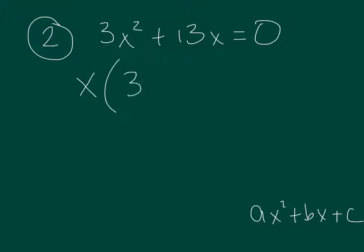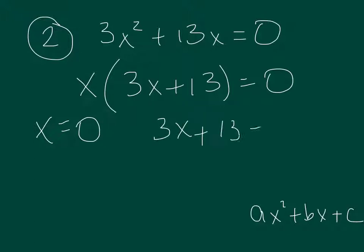If I divide an x out, I get 3x plus 13 equals 0. And then now there's nothing more we can do because there's no more x squared. So we set everything equal to 0, so you get x equals 0. And 3x plus 13 equals 0. Now this one's already done, so that's an answer.